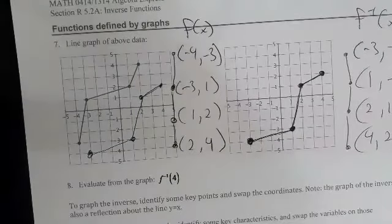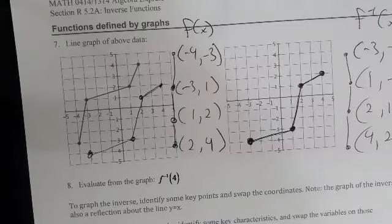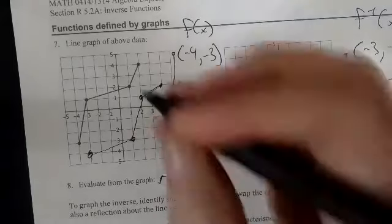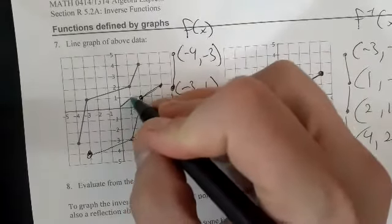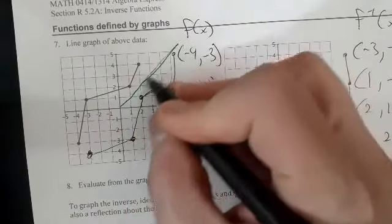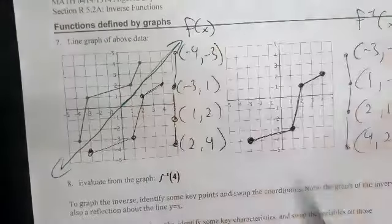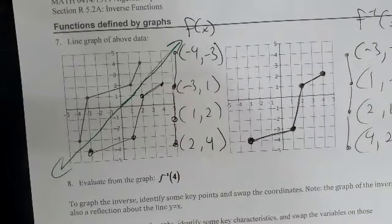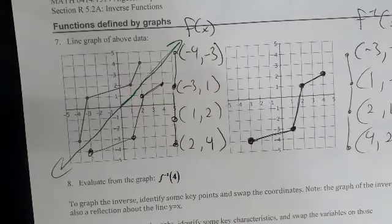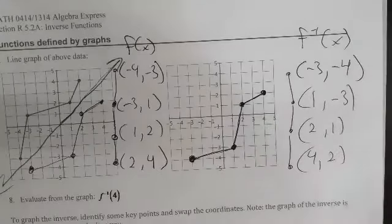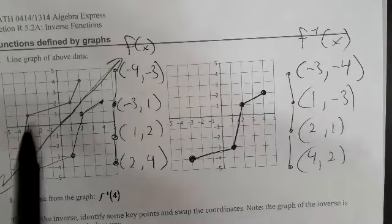The function and its inverse are symmetric about the Y equals X line — it's a 45-degree diagonal. To evaluate from the graph F-inverse of 4, I look at my F-inverse graph where X equals 4 and read off the output, which is 2.